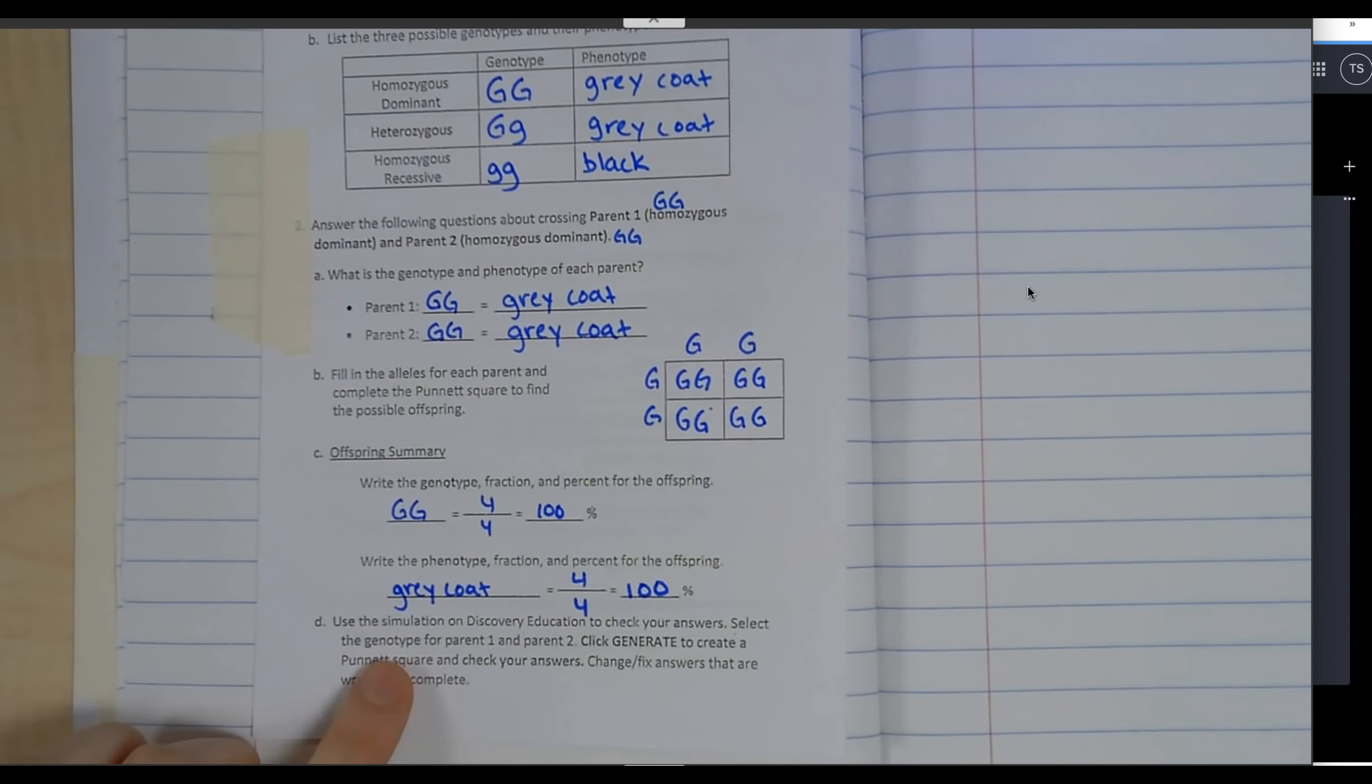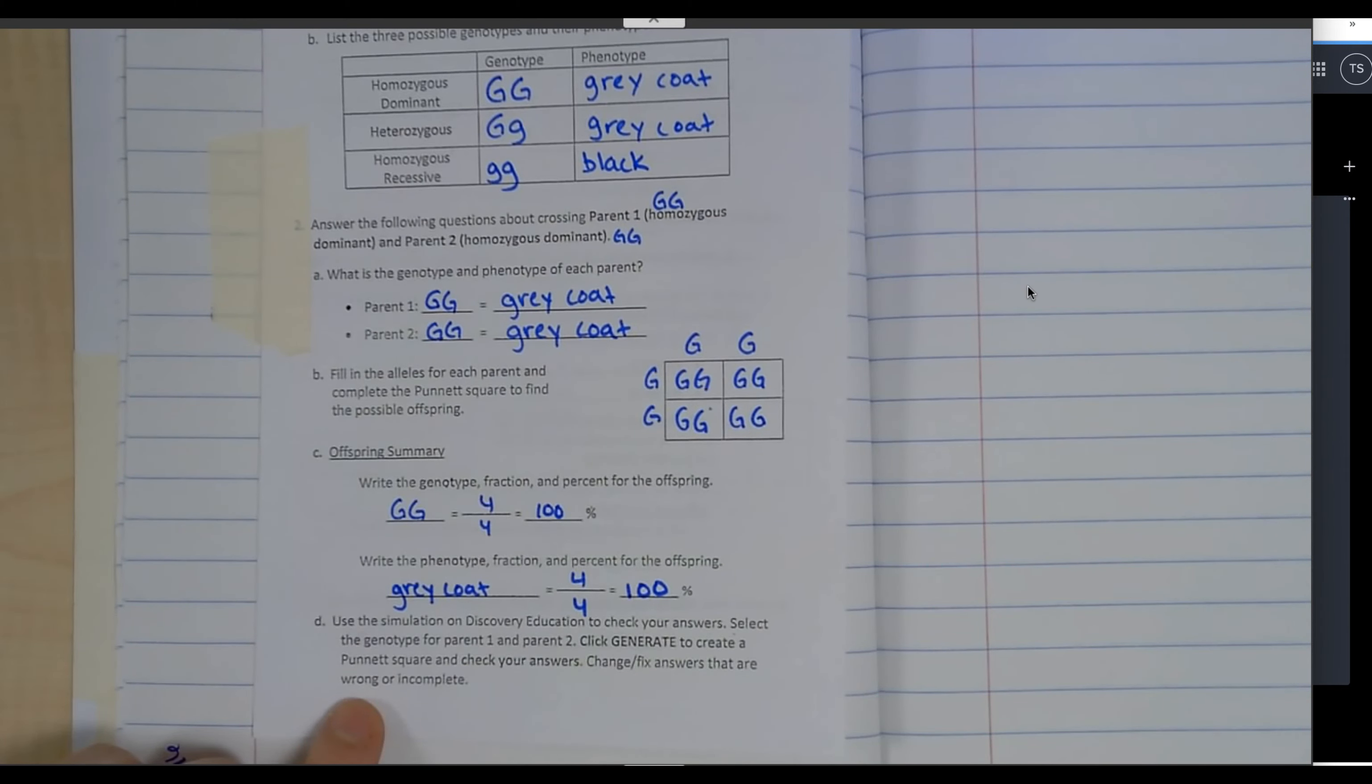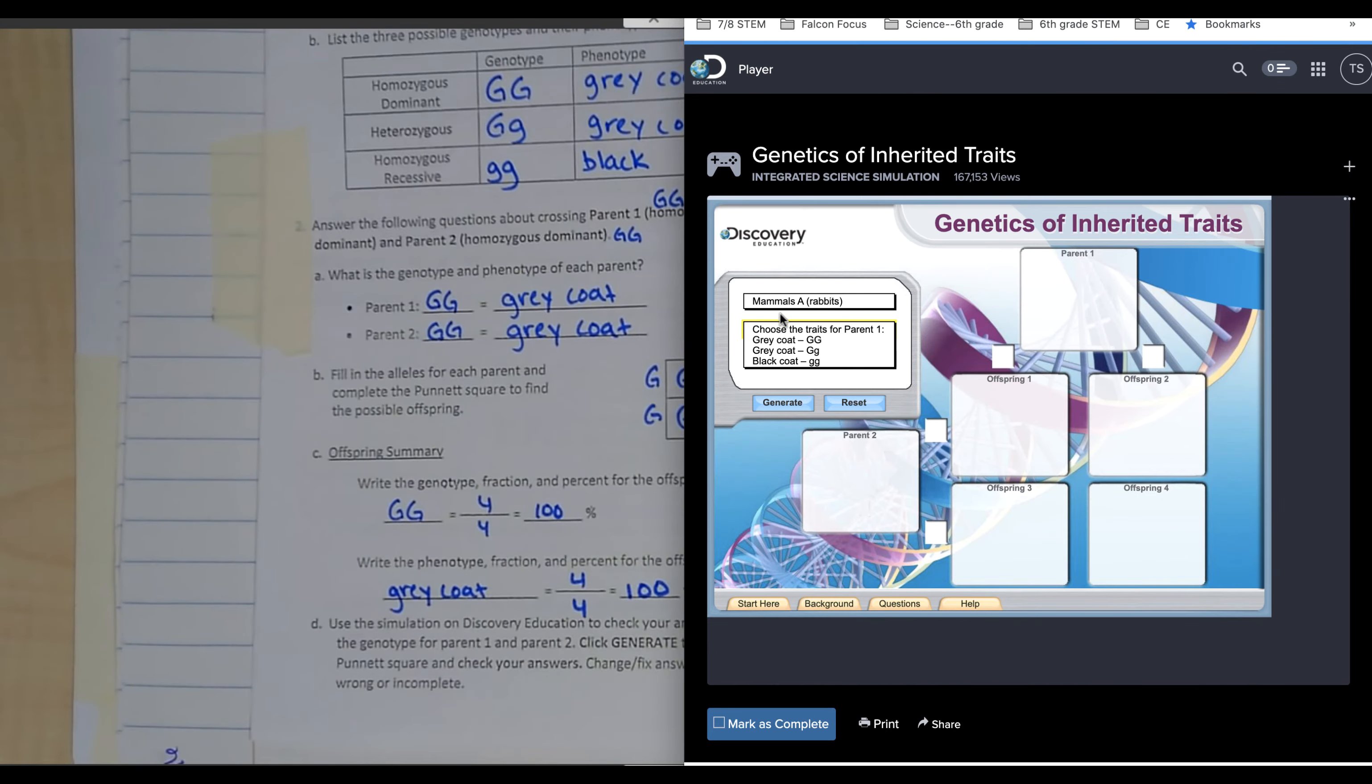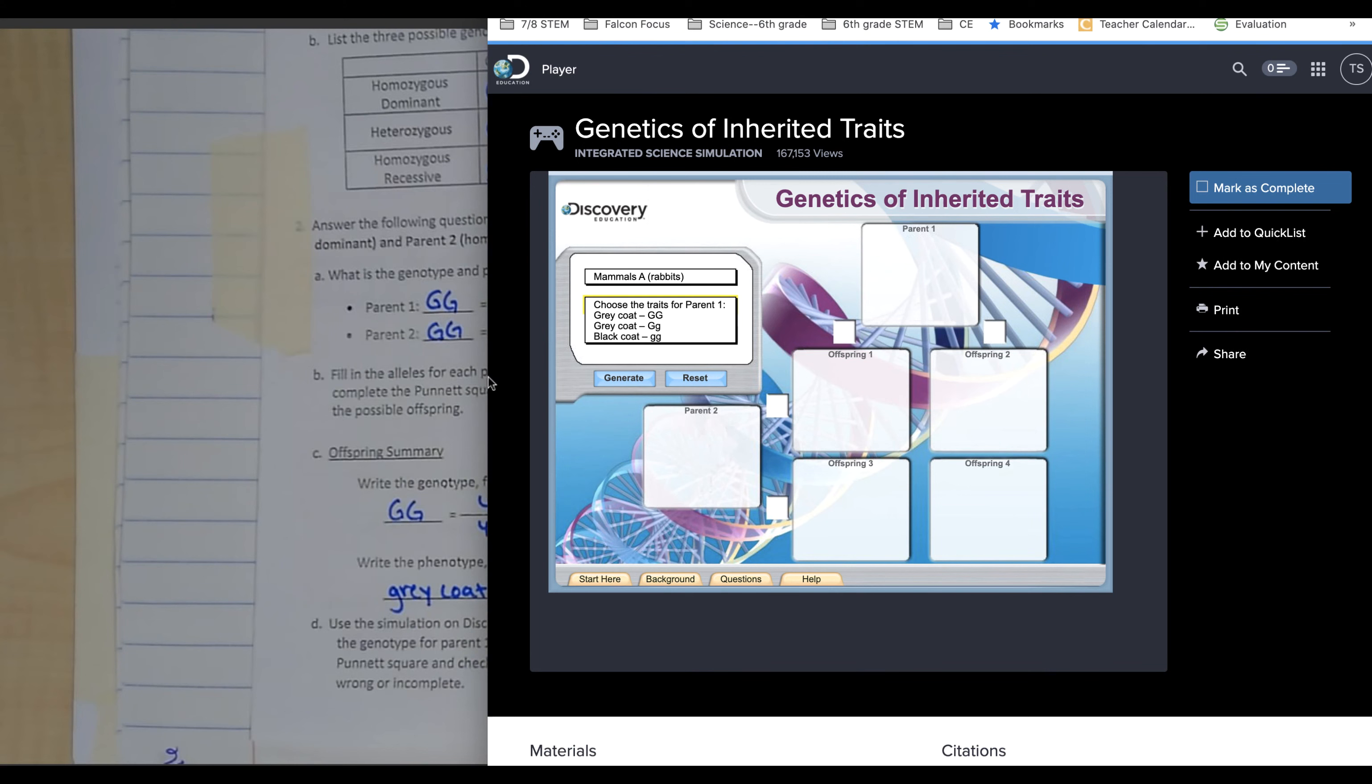It says use the simulation on Discovery Ed to check your answers. Select the genotype for parent one and parent two, click generate to create a Punnett square and check your answers. My first parent is homozygous dominant big G big G, and my second parent is also homozygous dominant. I'm going to click generate.